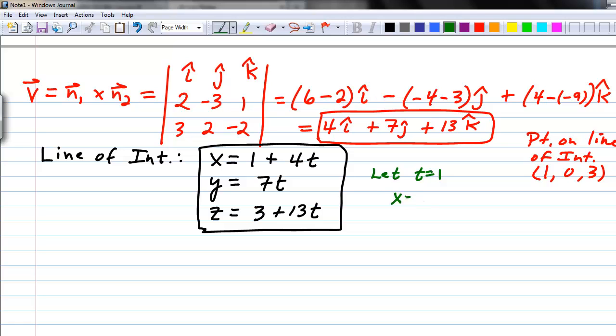If you do that, x will be equal to 1 plus 4, or 5. Y will be equal to 7 times 1, or 7. And z is equal to 3 plus 13, or 16. This gives us another point on the line of intersection, or at least it should be: 5, 7, 16.